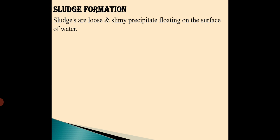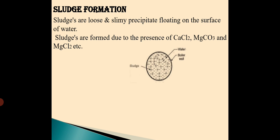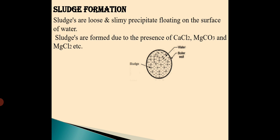The next one is sludge formation which is a very similar problem like scaling. What are sludges? Sludges are loose and slimy precipitates which are floating on the surface of water. What is the difference between these sludges and scales? Scales stick onto the inner surface of the boiler but these sludges will be floating on the surface of water. This is the only difference. These sludges are formed due to the presence of calcium chloride, magnesium carbonate, and magnesium chloride. This image shows the floating of sludges on the surface of water inside the boiler.